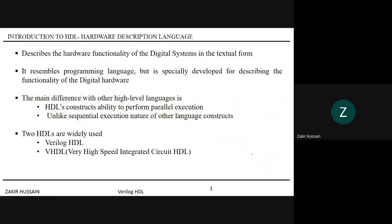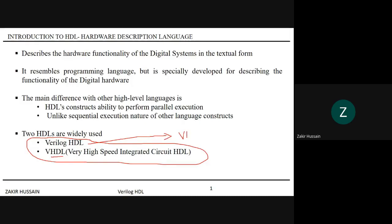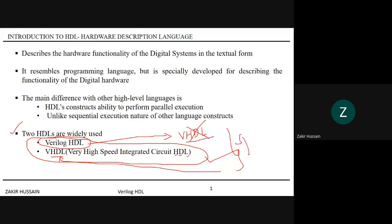We have two types of HDLs. Verilog HDL is one language and VHDL is another language. Never acronym Verilog HDL as VHDL, because VHDL stands for Very High Speed Integrated Circuit Hardware Description Language and is a completely different language. The most widely used HDLs across the world are these two.